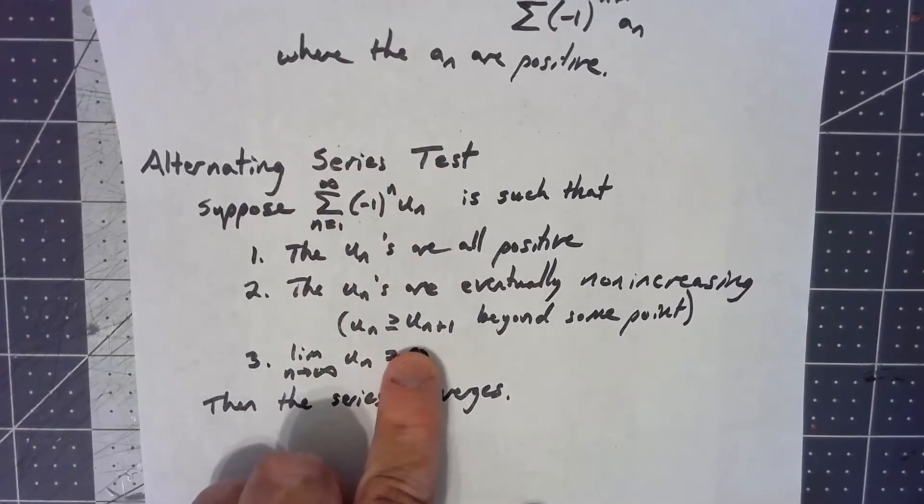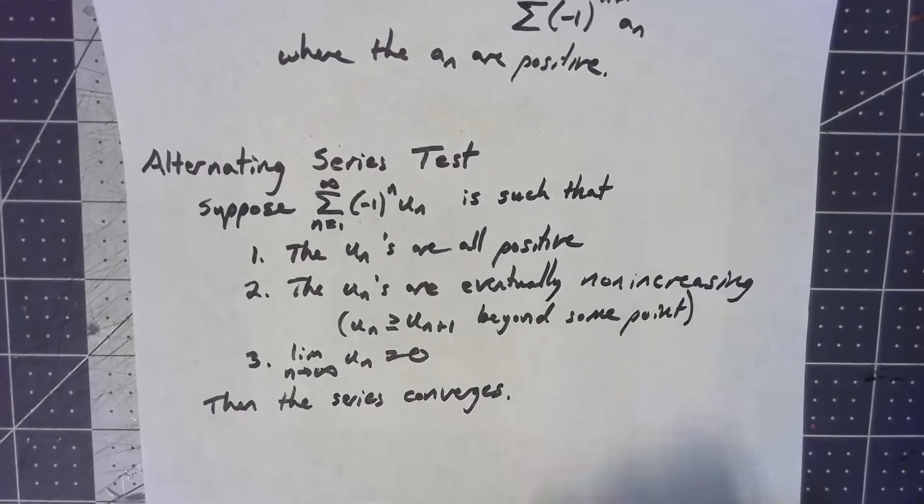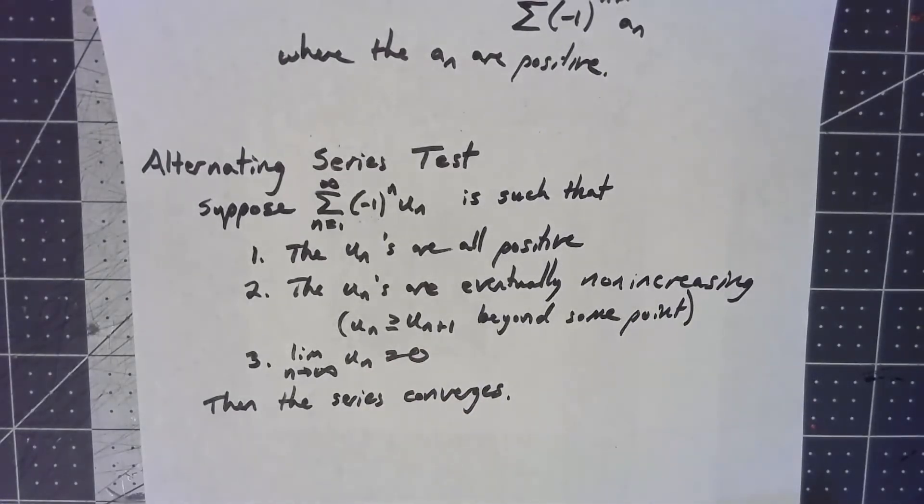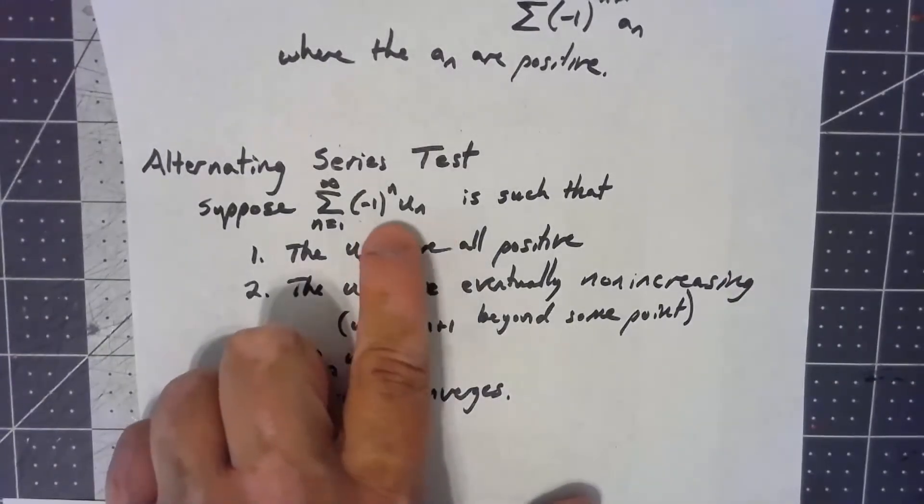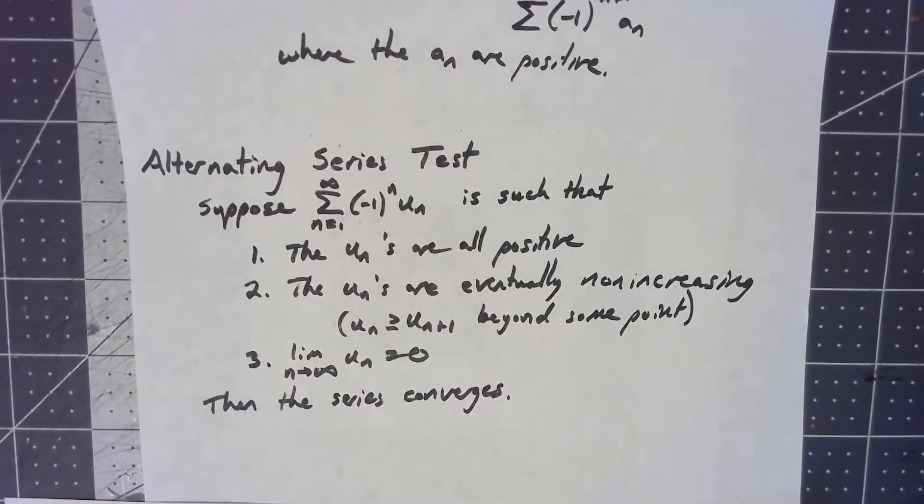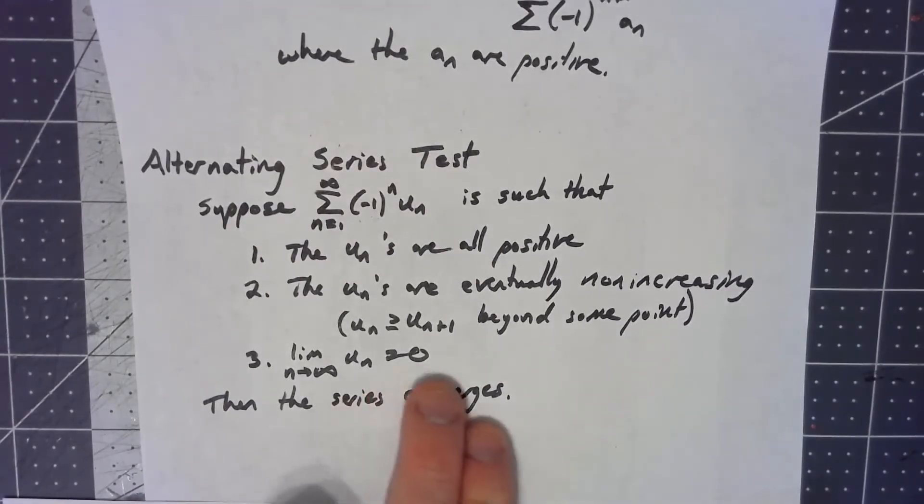And then the other thing is that these things are eventually non-increasing. So we might have a finite number of terms up front where things don't work, but always, since we're talking about infinite versus finite, a finite number of terms don't really change anything. So at some point, the number part of this is getting smaller, or at least not getting bigger. Further, the limit of those terms has to be zero. Under those conditions, the series converges.